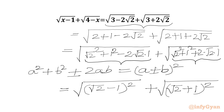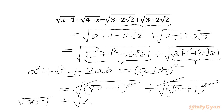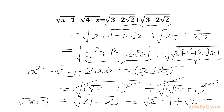Now we cancel the square root and the square. So we can write our equation as: square root of (x minus 1) plus square root of (4 minus x) equals (√2 minus 1) plus (√2 plus 1), which simplifies to 2√2.